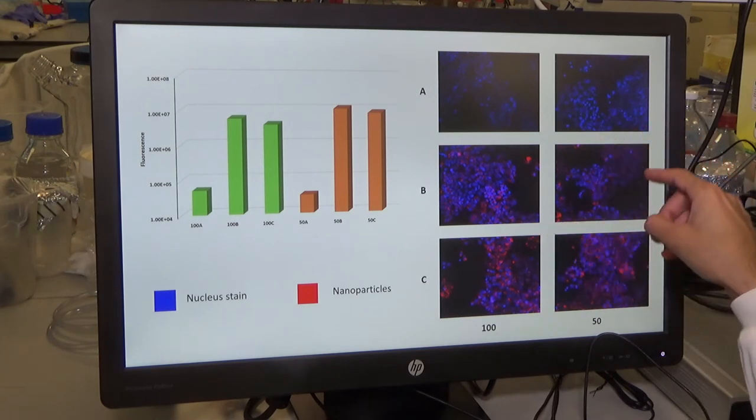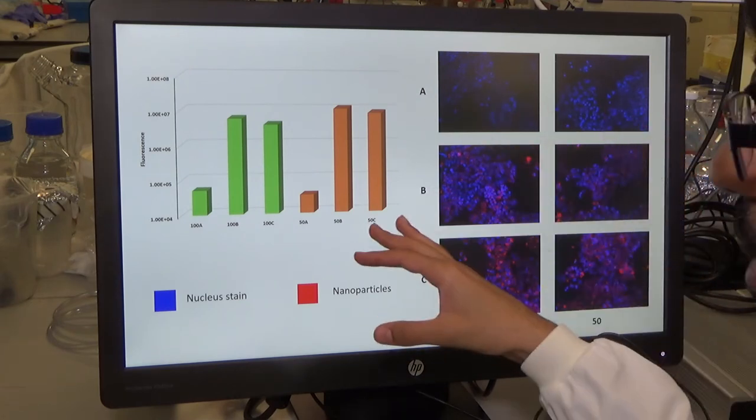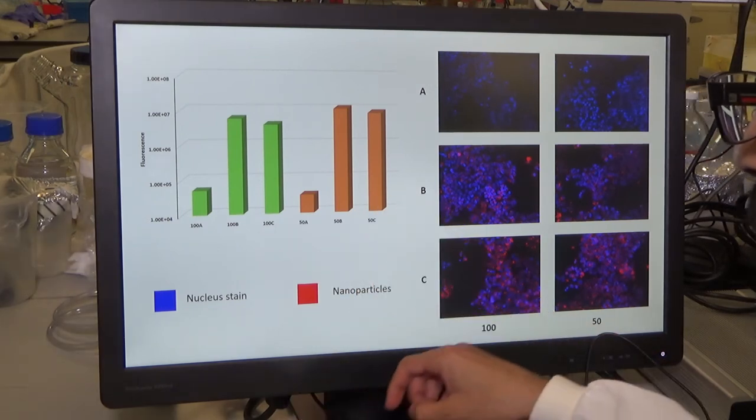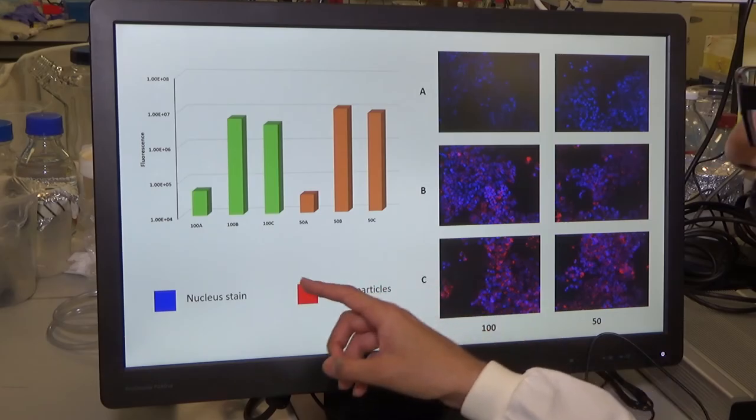And using a secondary mask, we can transfer this data to this graph, which represents the number of nanoparticles entering into the cells. So what we're looking at is how different physical properties of nanoparticles affect the cell uptake.